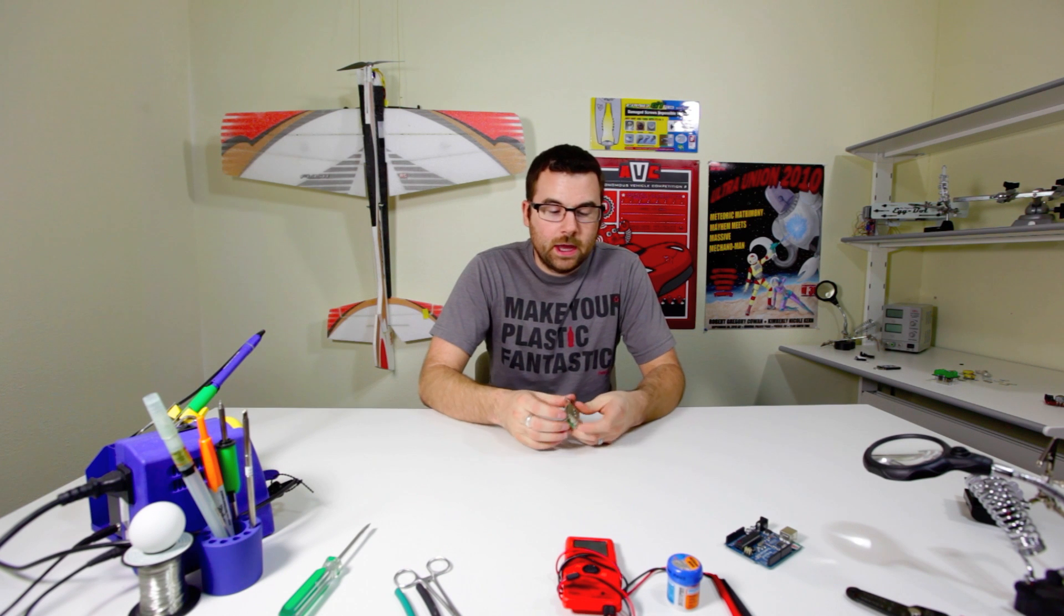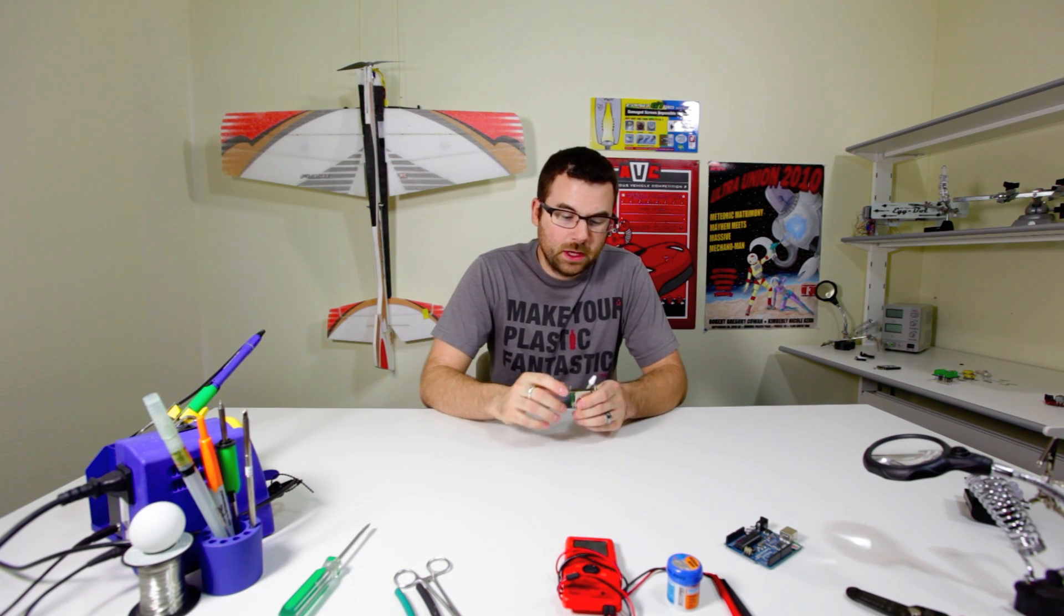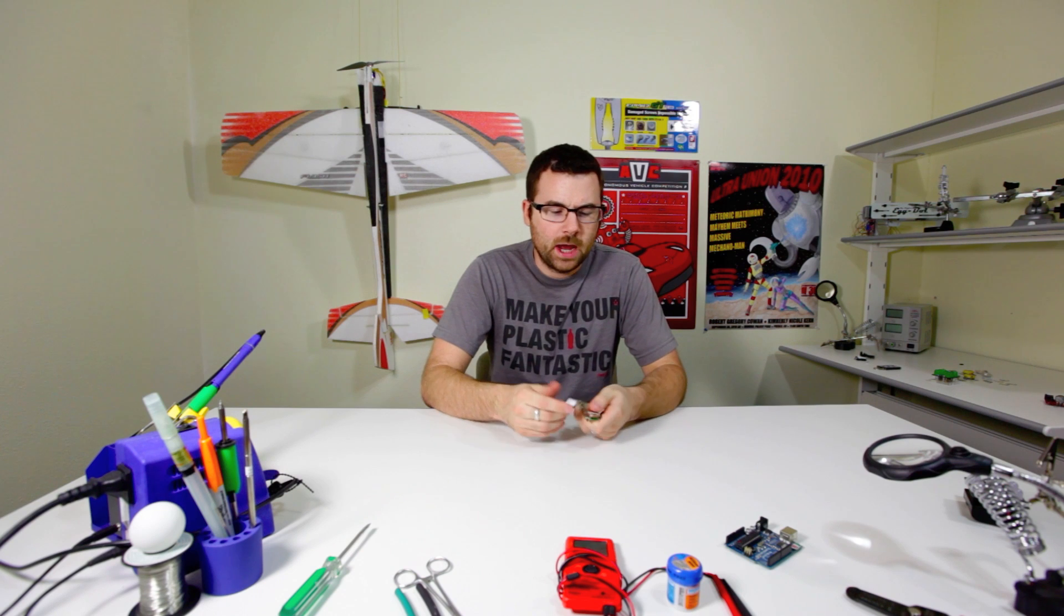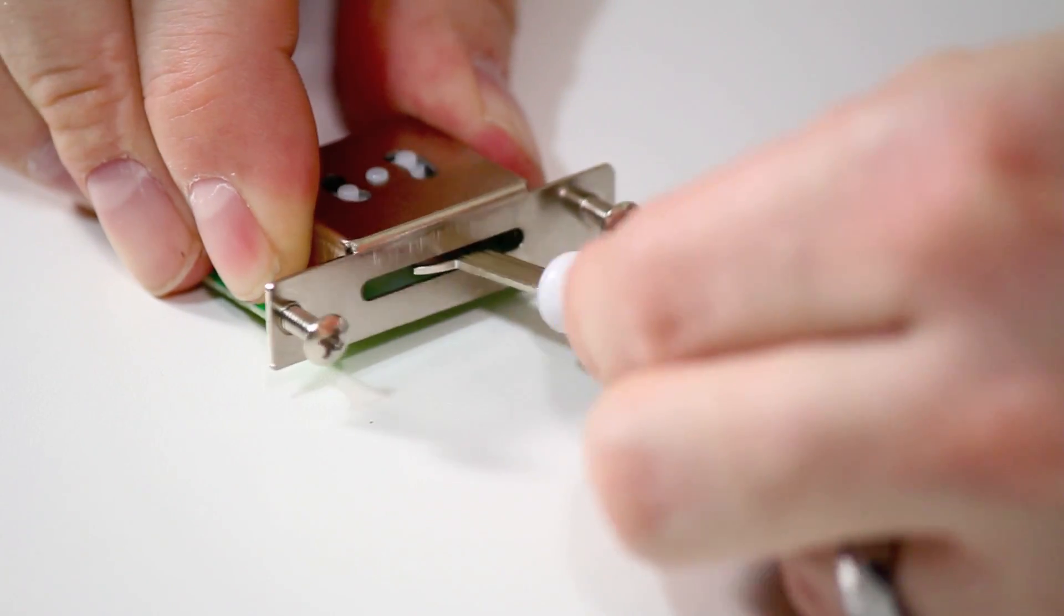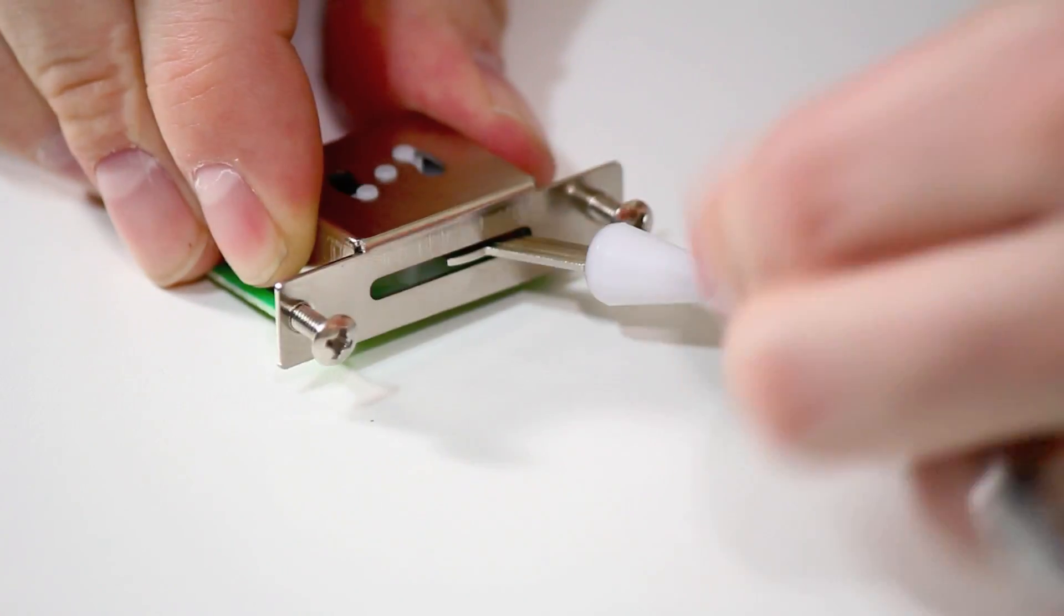Next up, we've got a five-way selector switch. This switch you would find commonly in electric guitars and this would be used to select between the various pickups. It's got a nice little lever here and it's got a nice clicking feel to it when you switch it.